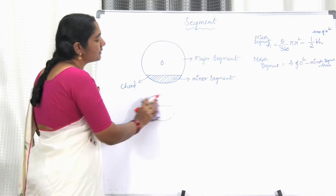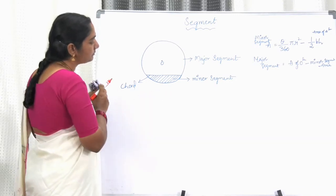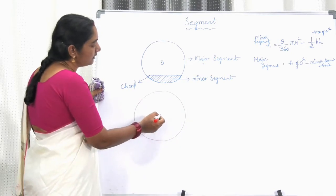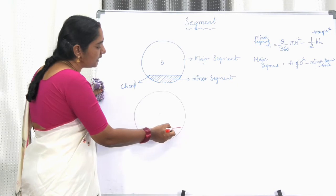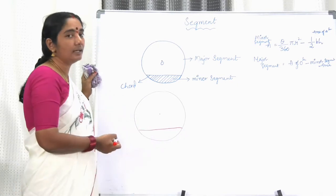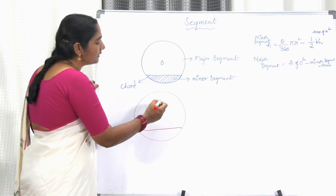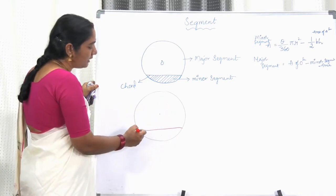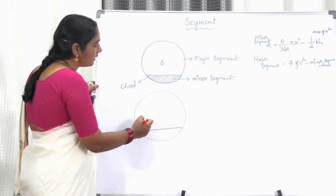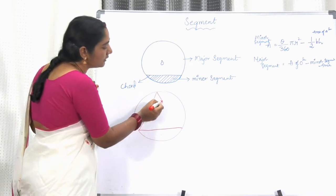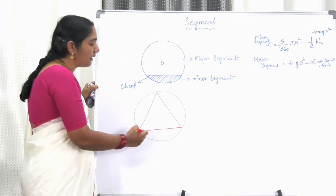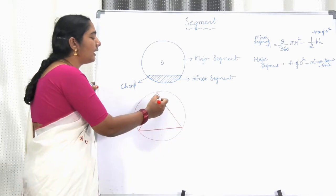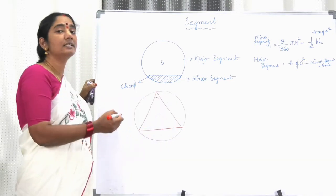One more point I would like to discuss. When we take a chord whose length is less than the diameter, the larger part is the major segment and the smaller part is the minor segment. In the major segment, the angle subtended by the chord at the circumference of the circle is always acute — it is always less than 90 degrees.